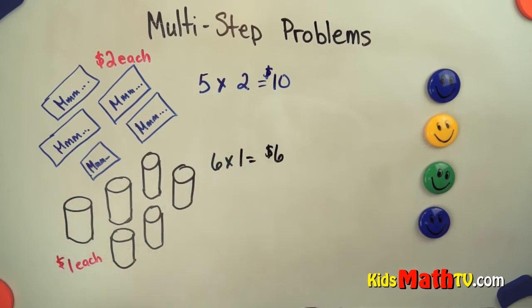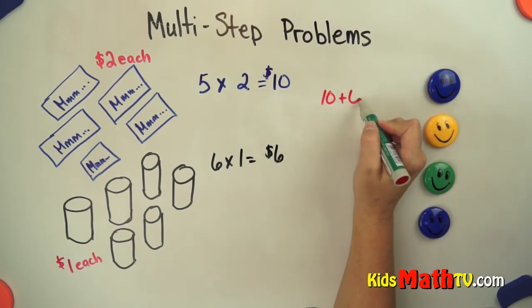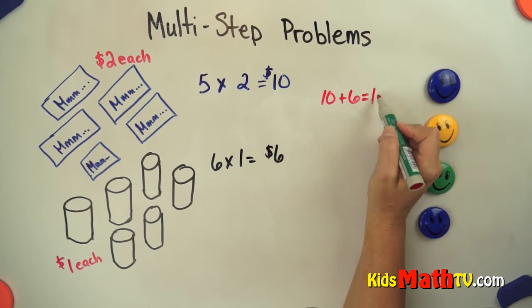So they have $10 in candy bars, $6 in sodas. We have to figure out what that total is, so we can add 10 plus 6, and that's $16 total for the food.